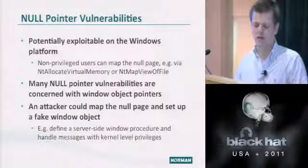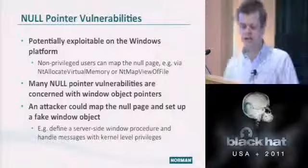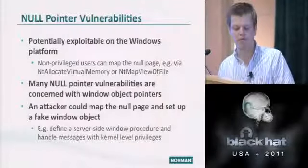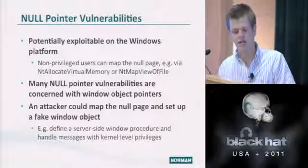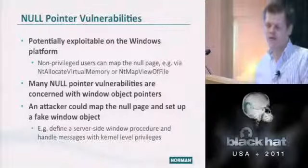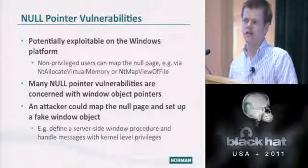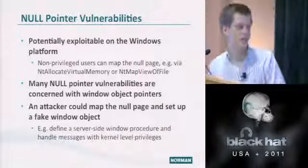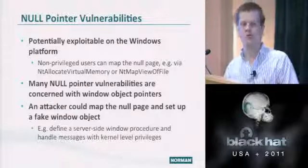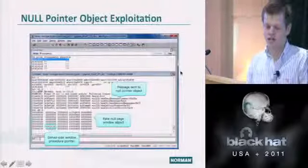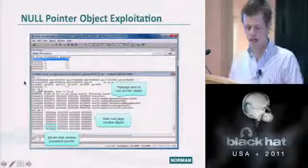Null pointer vulnerabilities are potentially exploitable on Windows since you can map the null page using NtAllocateVirtualMemory or NtMapViewOfFile. Many null pointer vulnerabilities involve window objects — you can map the null page, fake the window object, and set up a fake window procedure. If you set a flag indicating the window procedure is server-side (kernel mode), any subsequent message sent to that object will execute with kernel mode privileges, giving arbitrary kernel code execution.